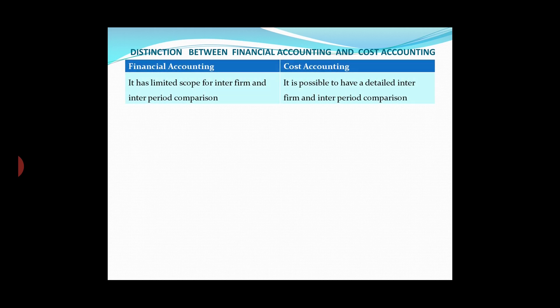Financial accounting has a limited scope for inter-firm and inter-period comparison. In cost accounting, it is possible to have detailed inter-firm and inter-period comparison.